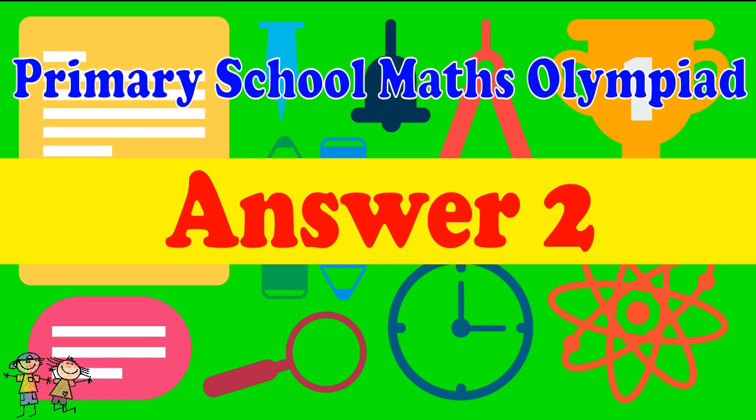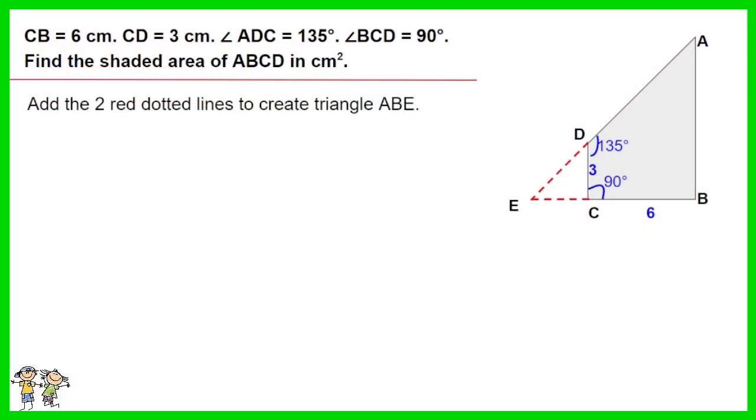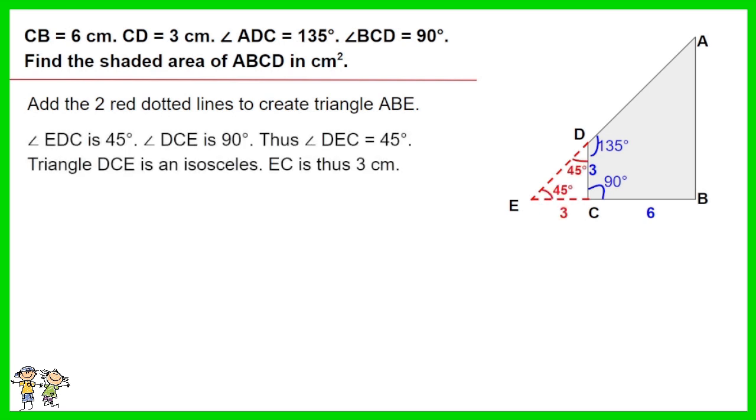Answer for question 2: Add the two red dotted lines to create triangle ABE. Angle EDC is 45°. Angle DCE is 90°. Thus angle DEC equals 45 degrees.